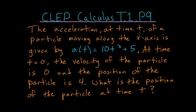The acceleration at time t of a particle moving along the x-axis is given by a(t) = 10t³ + 5. At time t = 0, the velocity of the particle is 0, and the position of the particle is 4. What is the position of the particle at time t? Essentially, this question is asking for a function which gives the position of the particle at any time t.